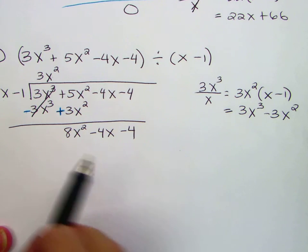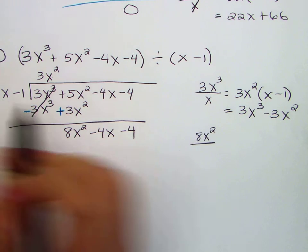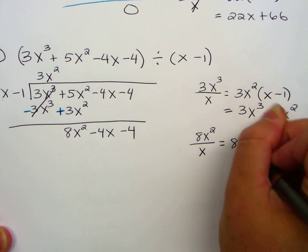Repeat, take the leading term, 8x squared, divide by that outside term, x, you get 8x.